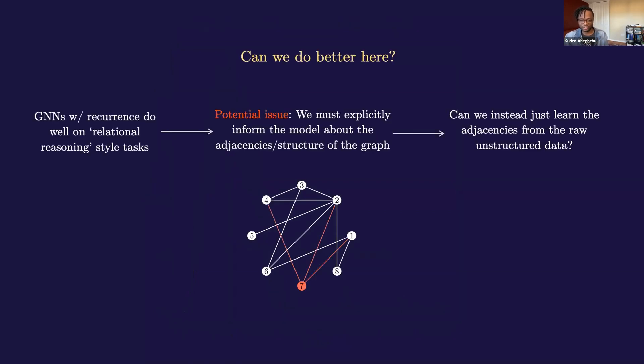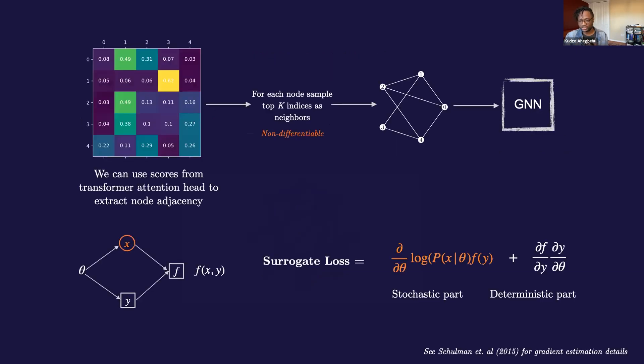Okay, shifting gears a little bit, can we do better still in another way? GNNs are fine, as we've seen they seem to do well on these relational reasoning style tasks, but one potential oddity is that we must be explicit about the structure of the network of the graph. That is, we must explicitly tell the network which nodes are connected to which other nodes. For Sudoku, for instance, we must be explicit about saying that things that are in the same row, things that are in the same column, things that are in the same cell are connected. Could we instead learn the adjacencies from scratch from the raw unstructured data?